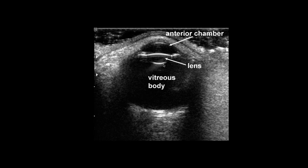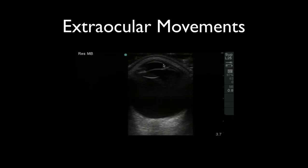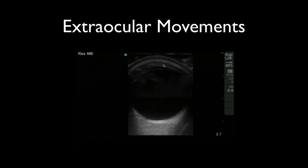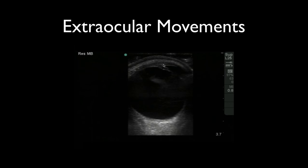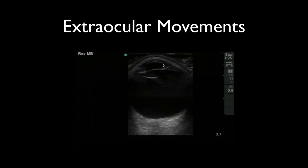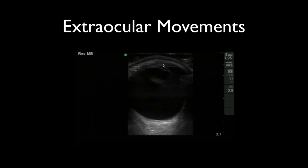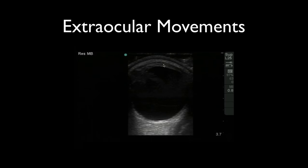A nice thing you can do with ultrasound is evaluate extraocular movements. With the patient's eye closed under the tegaderm and gel, say 'look right, look left, look up, look down' and you should see smooth movement. You're looking in the posterior chamber for any hemorrhage or detachment. These are all examples of normal eyes.